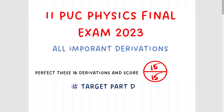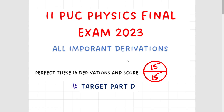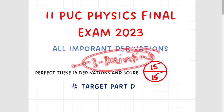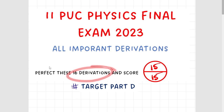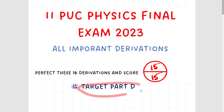In this video we will discuss important derivations. I will cover 16 derivations — this will be more than sufficient to score. If you solve 12 to 13 derivations, you will easily get 10 out of 15, and 3 derivations in the final exam will be solved. I guarantee at least 12 to 13 — to be on the safer side, 16 derivations. In this video I will show you target Part B and target Part D, and I will discuss the numericals and derivations.